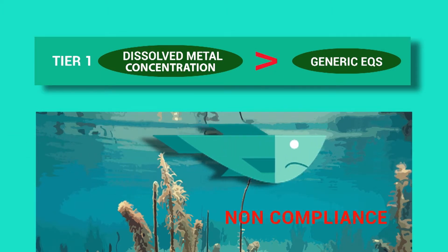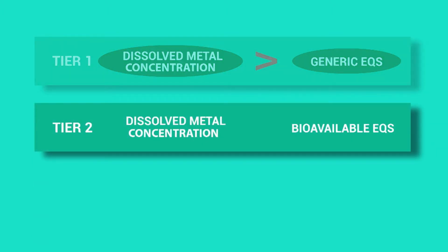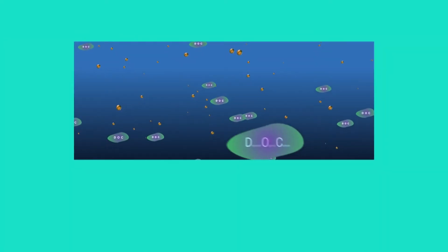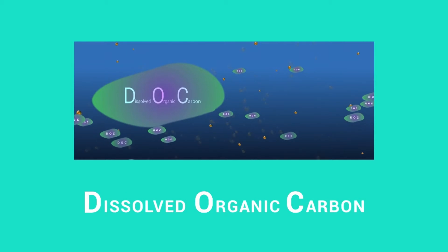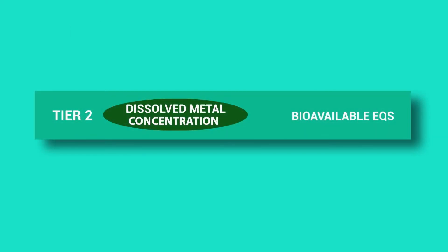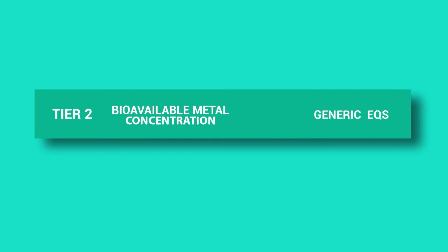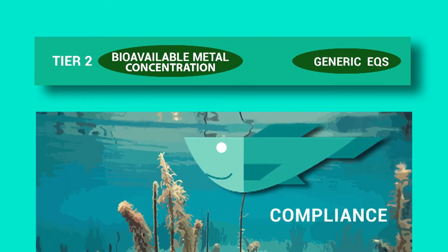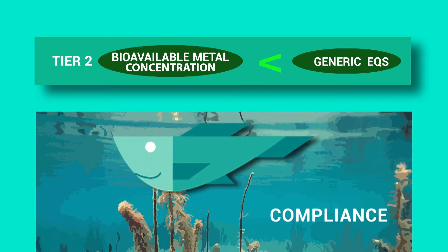Sites or samples failing at this tier progress to the second tier. In this second tier, information on additional supporting water quality parameters — pH, DOC and calcium — is required as input to calculate the bioavailable EQS or the bioavailable metal concentrations. Please note that for most metals, DOC is the key parameter that influences bioavailability; therefore, we strongly recommend implementing routine DOC monitoring. In this second tier, the dissolved metal concentration is compared with the site-specific bioavailable EQS. Alternatively, you can check compliance by comparing the bioavailable metal concentrations with the generic EQS. Compliance is achieved where the bioavailable metal concentration is lower than the generic EQS.